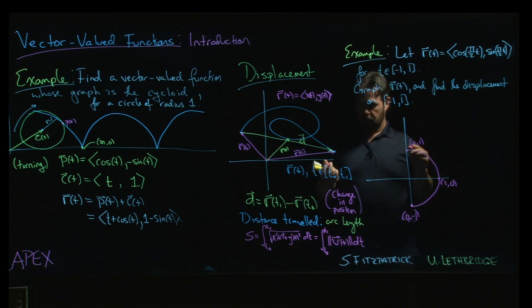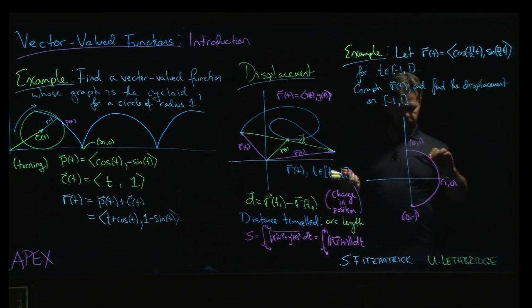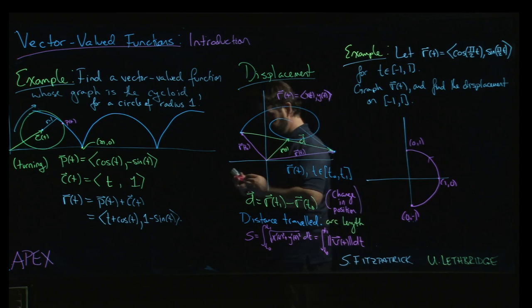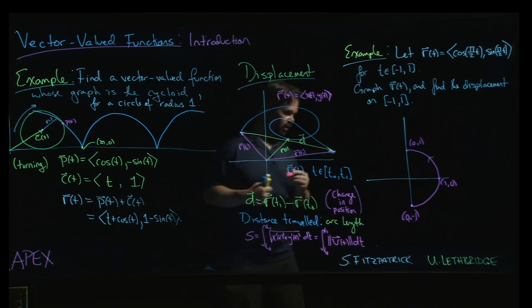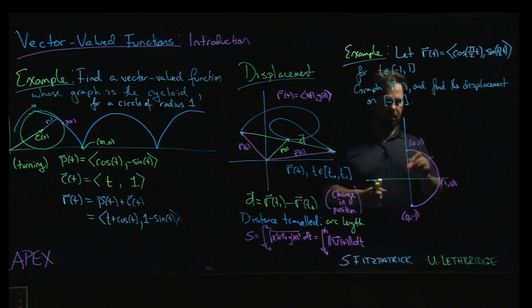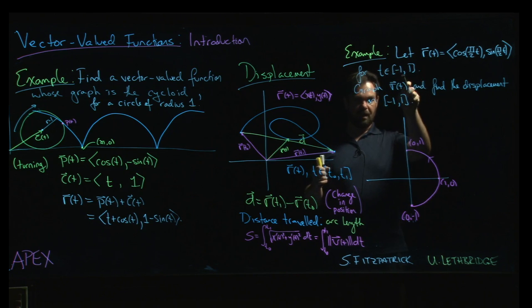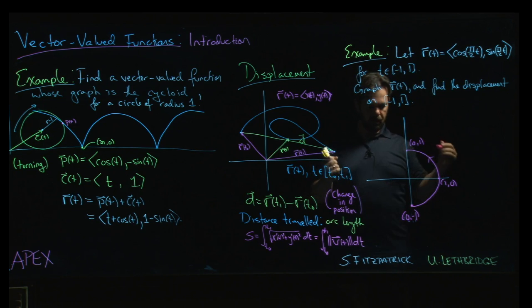By the way, one thing you might want to do is you can sometimes indicate there's a direction of motion associated with this curve. The nice thing whether you're doing parametric curves or vector-valued functions, there's an orientation, there's a direction along the curve that's inherited from the natural ordering of the real numbers. We're going that way.